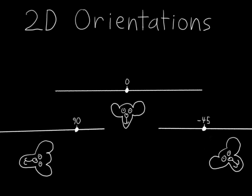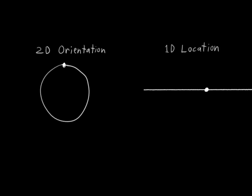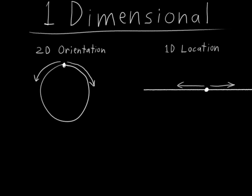Does that make sense? I really want to drive this home. Two-dimensional orientations are a lot like one-dimensional locations. They can only vary in one way, along a line. The only difference is that orientations are on a curved line that wraps back on itself. But the idea is the same. They are both a one-dimensional kind of thing. Kind of weird, huh?